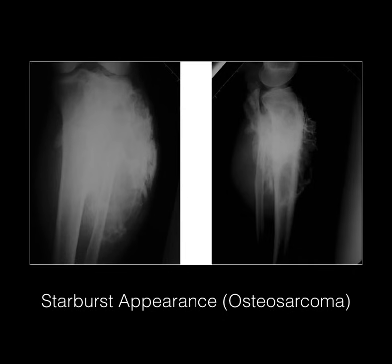Here is a starburst appearance, which you classically see in the bone of a patient with osteosarcoma. Not pictured here, but keep in mind: if we had a different bone tumor called Ewing sarcoma, you would see onion skinning. So onion skinning is Ewing sarcoma and starburst appearance is osteosarcoma — be able to differentiate those.